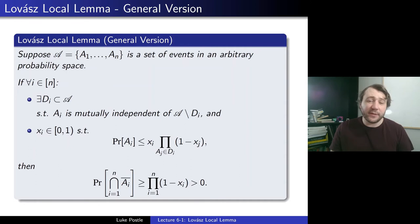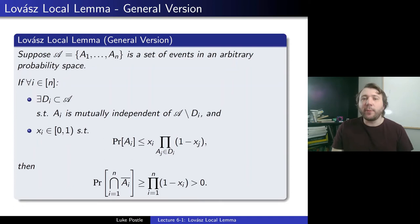If we can find such Xi's, then we claim none of the events happen with positive probability. In particular, you can show an explicit lower bound of the product of the (1 − Xi)'s, which will often be exponentially small if the Xi's are real constants, but still positive. So that's the general version of the local lemma — we're showing the outcome exists, but maybe with exponentially small probability, so it's not clear that we could find it efficiently algorithmically, but we can show it exists.